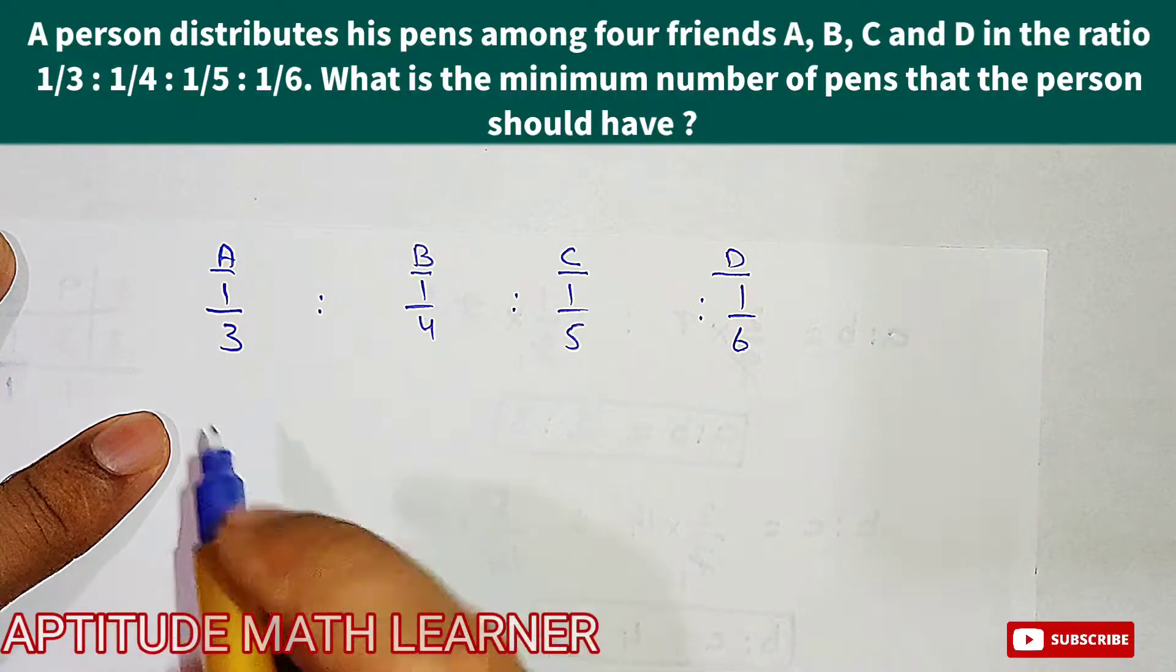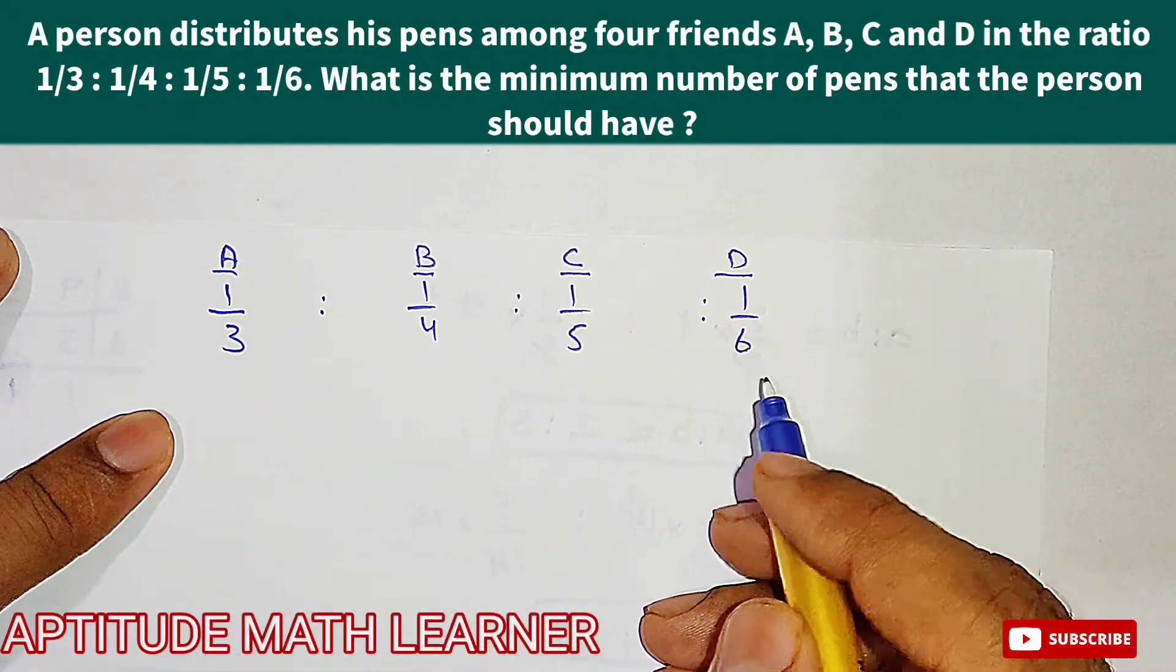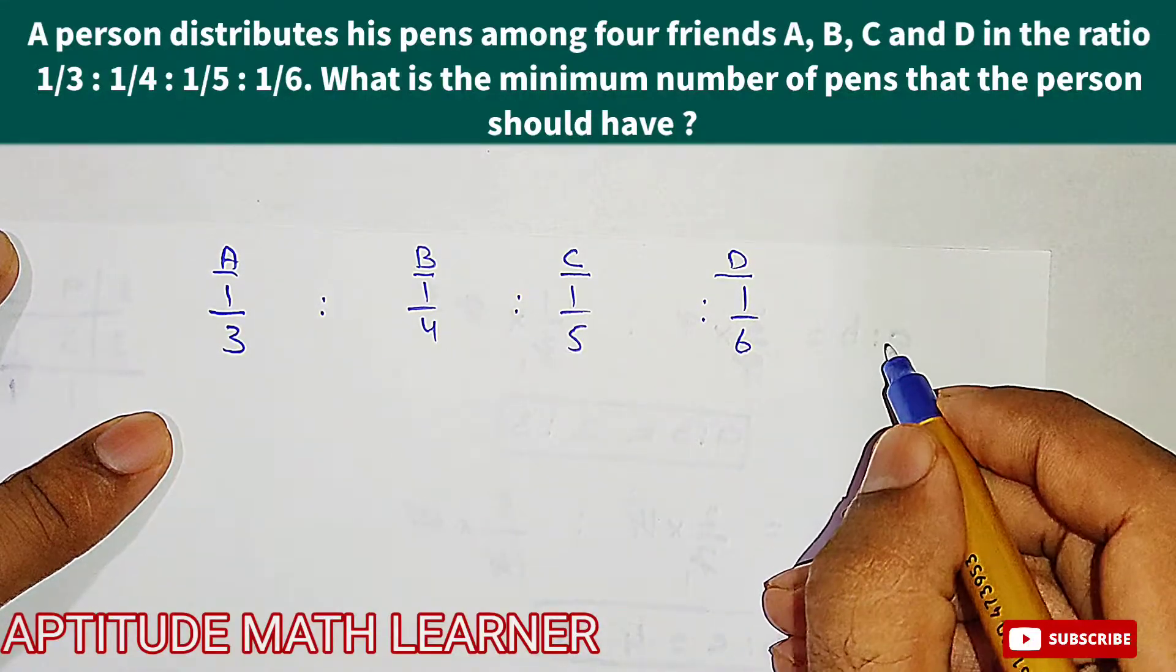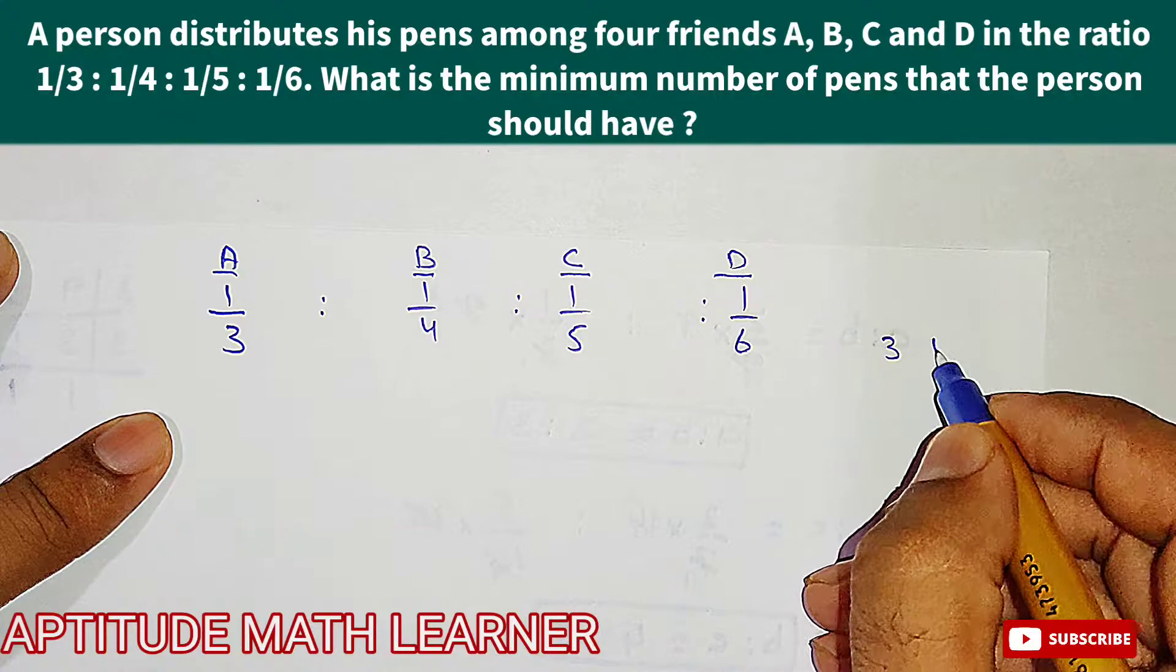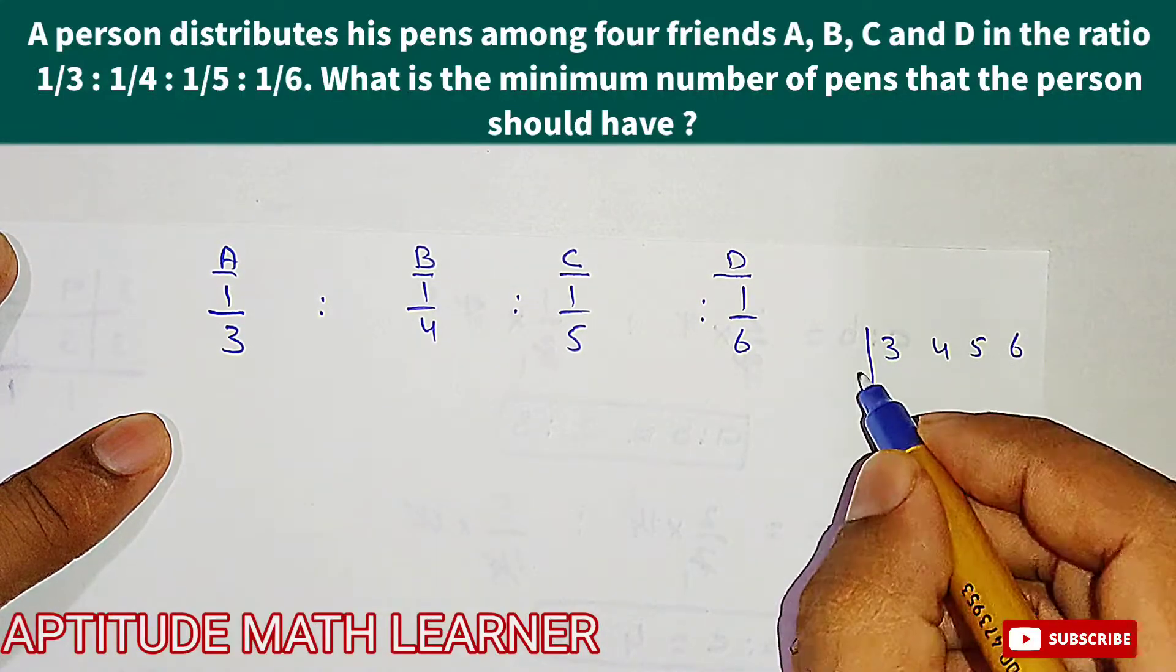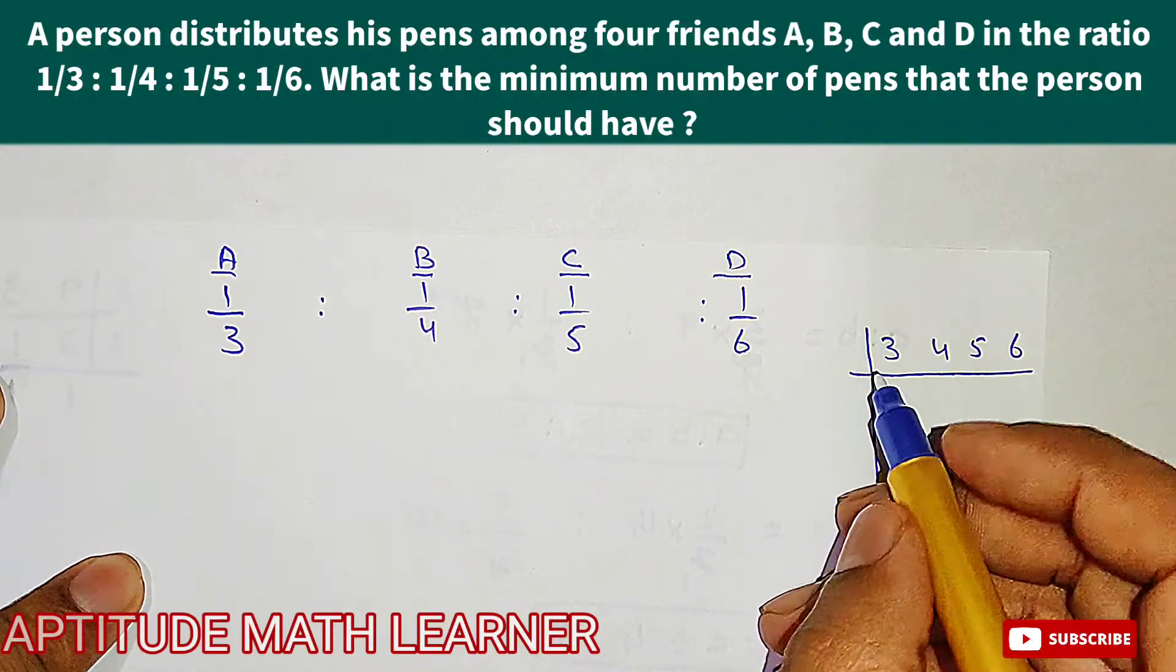We take out the LCM for 3, 4, 5, and 6. So we find out the LCM first. We take 2 to find out the LCM.